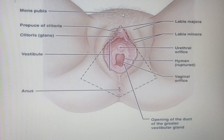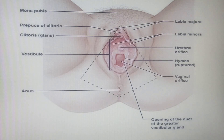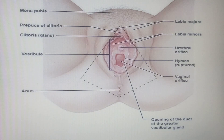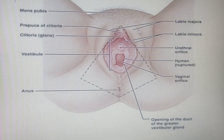As the mons pubis descends inferiorly and posteriorly on either side, we find a thick fold of skin known as the labia majora. There are two of them, one on each side. The singular form is labium majus. The word labia or labium refers to a lip.